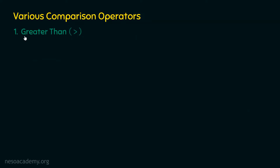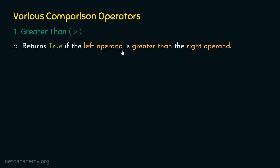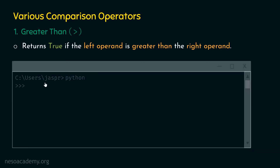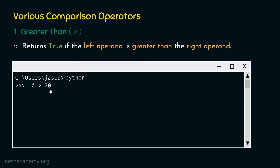Let's start with the first comparison operator, which is greater than. The greater than operator returns true if the left operand is greater than the right operand; otherwise, it returns false — there are only two possible values it can return. Let's open our command prompt and see one example: 10 > 20. Is 10 greater than 20? No, 10 is not greater than 20, so we will get false from Python.